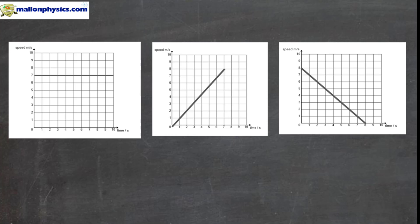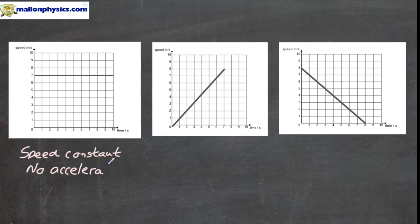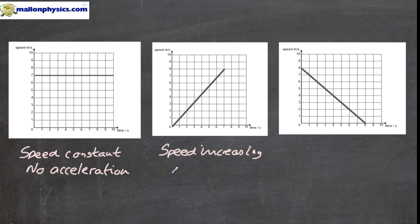Here we have three speed-time graphs, and from these we can interpret what is happening to the object's motion. Looking at the first graph, the speed is constant at seven meters per second, so we say the speed is constant and there is no acceleration — because acceleration only happens when the speed changes. In the second graph, the speed is definitely increasing from zero meters per second to eight meters per second over eight seconds. When the speed is increasing, we say the object is accelerating.